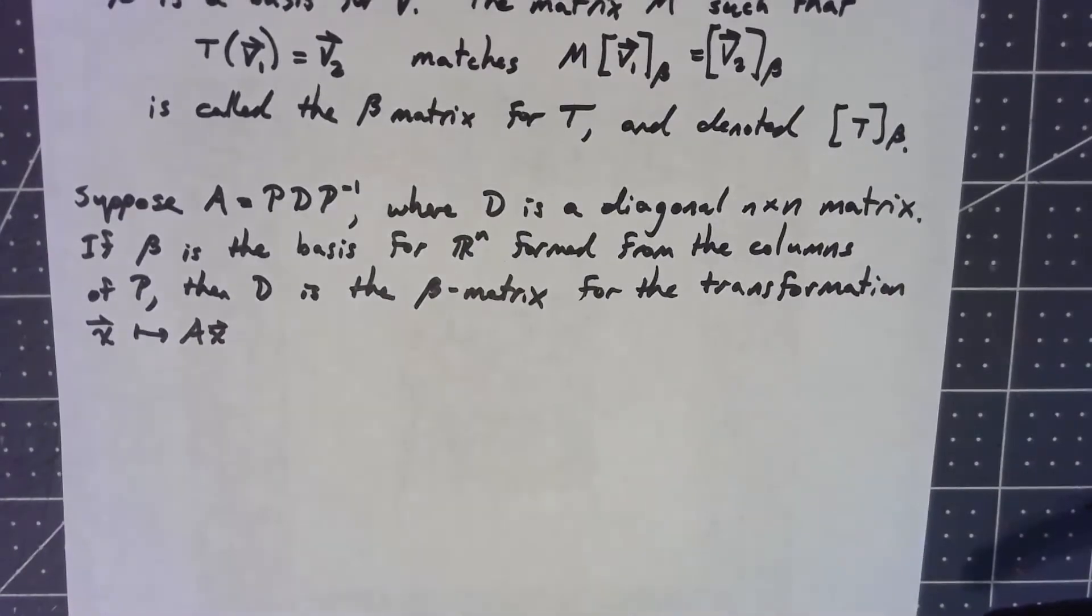So suppose A is a diagonalizable matrix. We've got a matrix P that diagonalizes it, and then we've got a basis, but that basis is formed from the columns of P.